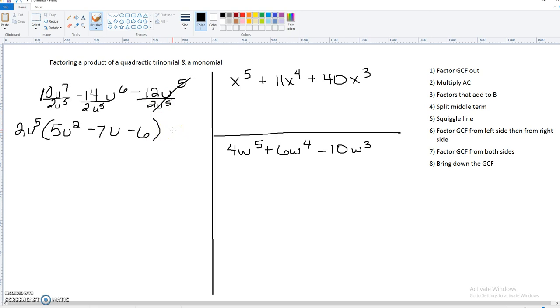So now that we have factored out the greatest common factor of each term, now we can go ahead and start the actual AC process. So, of course, this is A, B, C.